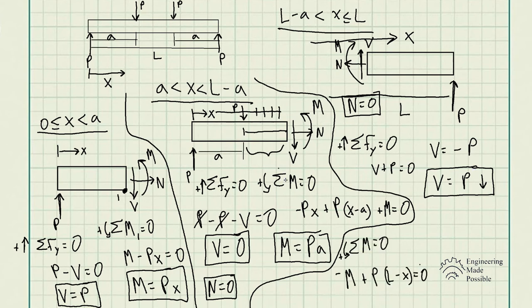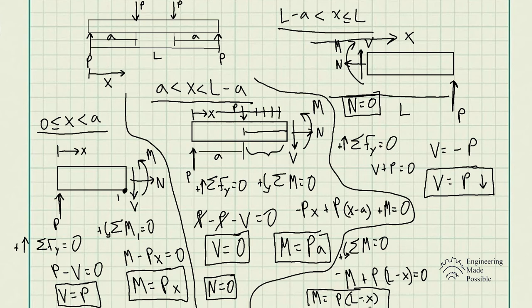For the sum of moments: our moment M is clockwise, and with counterclockwise positive convention, we have negative M plus P times the perpendicular distance (L minus X) equals zero, giving M equals P times (L minus X). These are the shear and moment equations for all three segments. The segment boundaries are determined by where the external forces are applied.